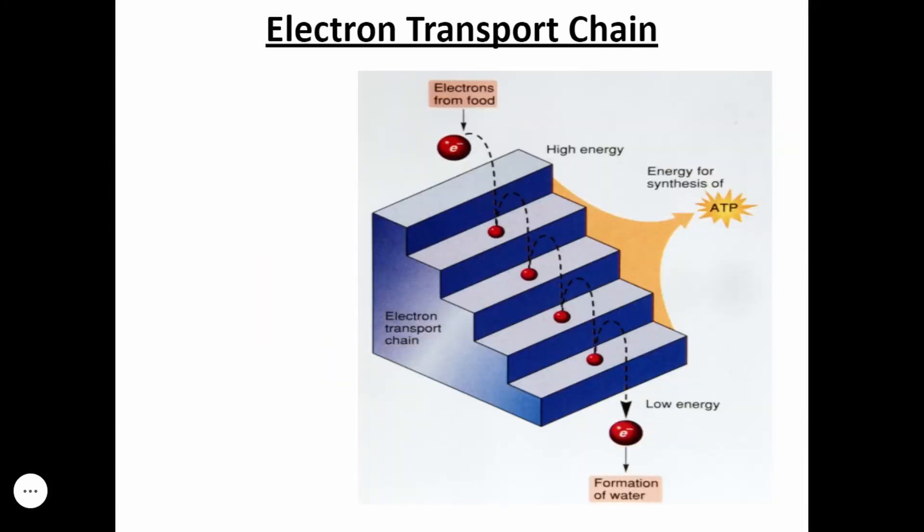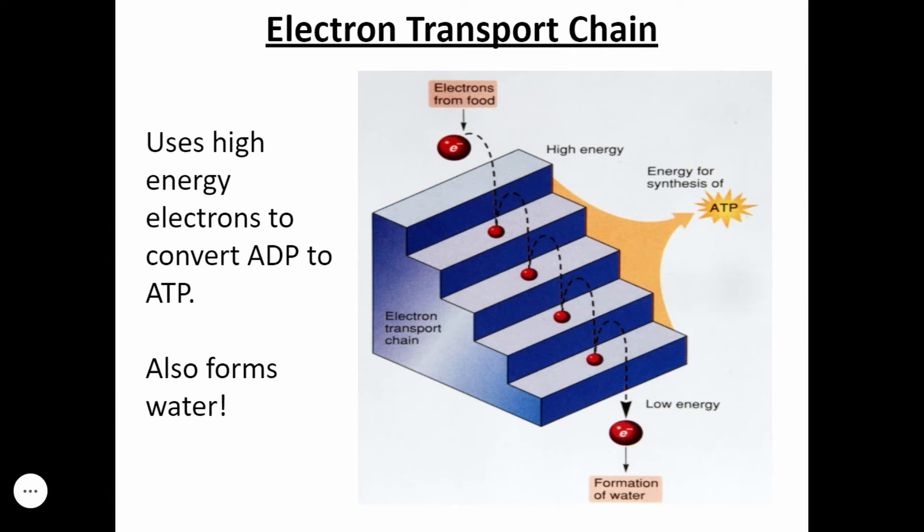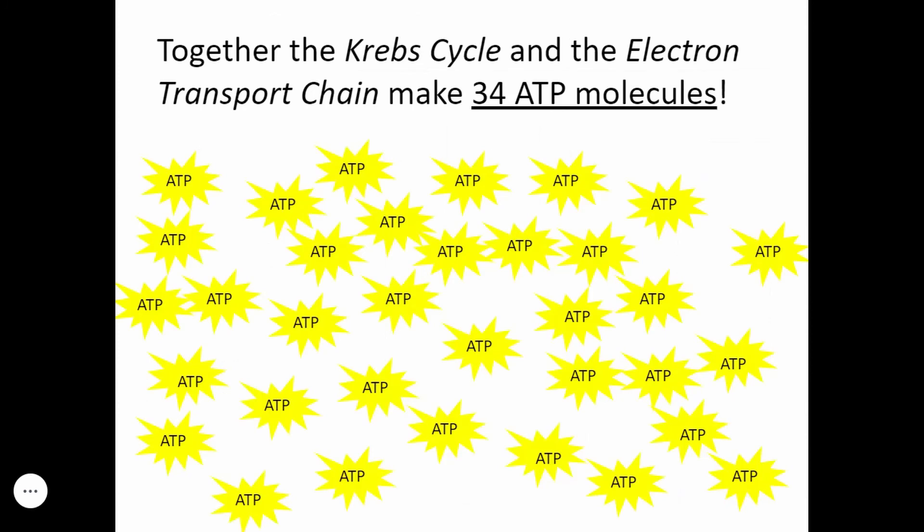Now let's move into the electron transport chain. This ETC uses high-energy electrons to convert ADP to ATP, and it also forms water. As you see in the picture, the electrons start with very high energy. And as they go through the ETC, the electrons will make ATP, but they'll also lose energy, like going down steps. So at the very end, we have these low-energy electrons that help to make water. Together, the Krebs cycle and the electron transport chain make about 34 ATP molecules. Now this number is still hotly debated, but we're going to go with 34.